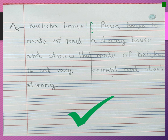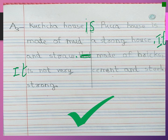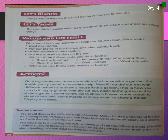Question 3: What is the difference between a kacha house and a paka house? A kacha house is made of mud and straw and is not very strong. A paka house is made of bricks, cement and steel and is strong.